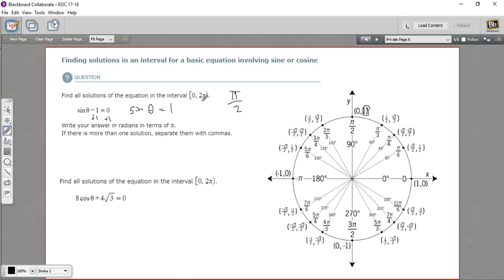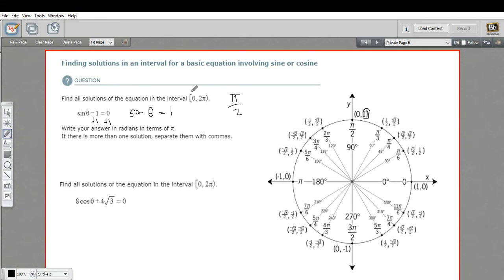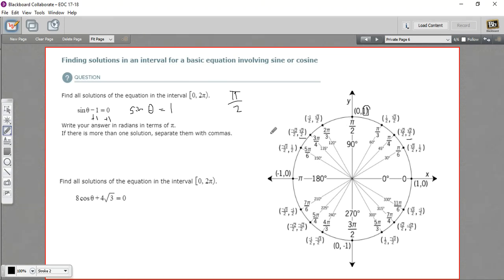Sometimes in equations like this, on this interval all the way around the circle, you might have an answer that shows up more than once. For example, if you were looking for all the values where the sine is √2 over 2, well, there's one and there's one, both positive √2 over 2. So there can be more than one answer.